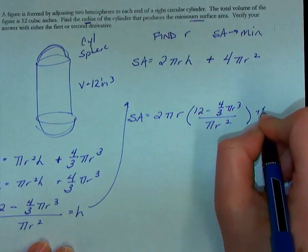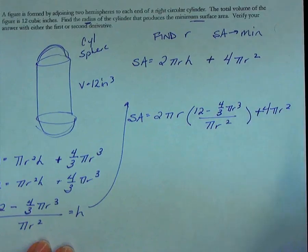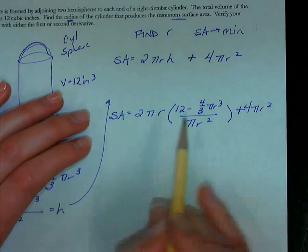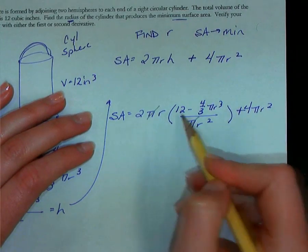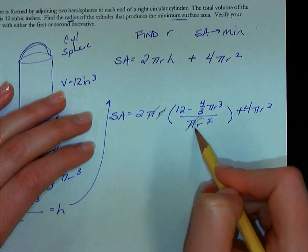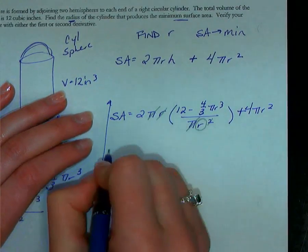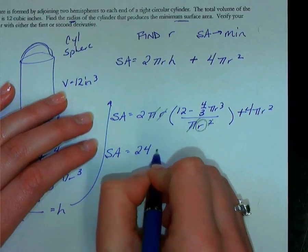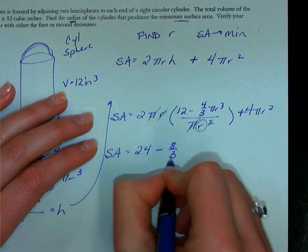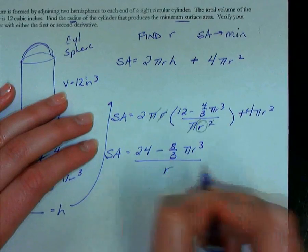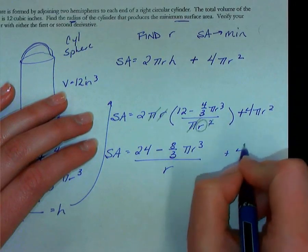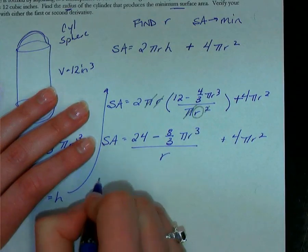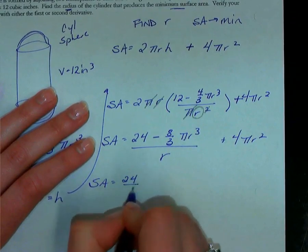I'm going to do a whole lot of simplifying before I try to take any derivative here. So looking at this, if I look, I can cancel out πs and I can cancel the radius with one of those, so I'm left with just radius in my denominator. So surface area is equal to, distribute the 2, 24 minus distribute (8/3)πr³, all over r, plus 4πr².